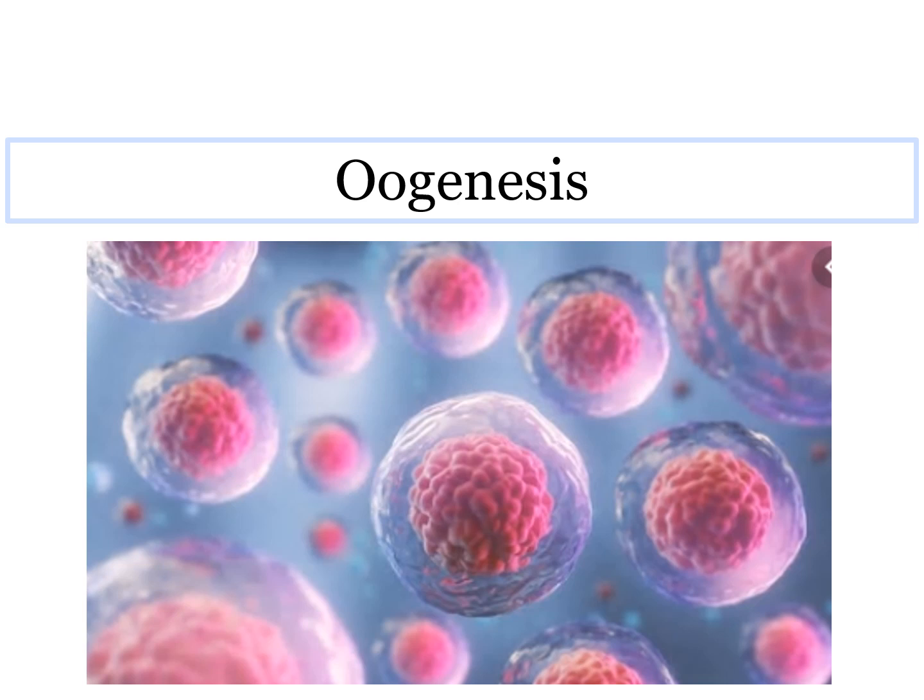Hello students. Welcome to part C of the topic human reproductive system. In this section, we are going to learn about oogenesis. Oogenesis is a process in the female human reproductive system that involves the growth of a mature ovum.